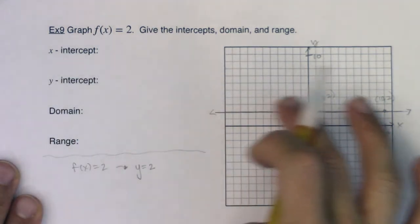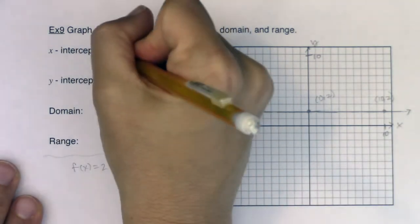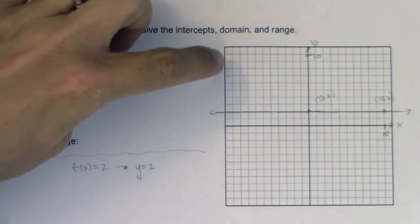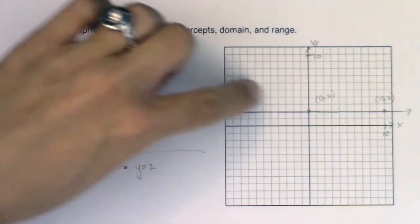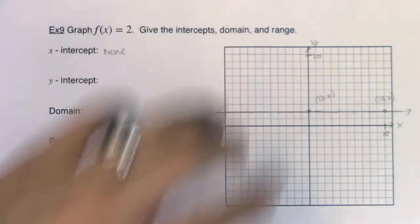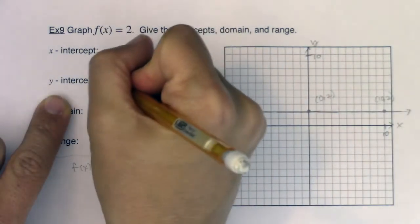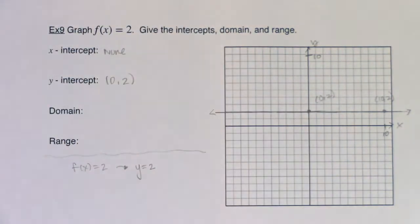Alright, x-intercept. When does this line, when does this horizontal line cross the x-axis? Well, it never does. So I don't have an x-intercept. And that's fine. It might seem odd right now. Most lines do have an x-intercept. Horizontal lines don't necessarily have one. And there are plenty of functions out there that don't have x-intercepts. This particular function does have a y-intercept at 0 comma 2. Alright, and it is a function. It passes the vertical line test.